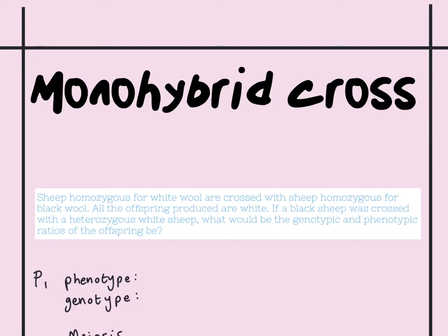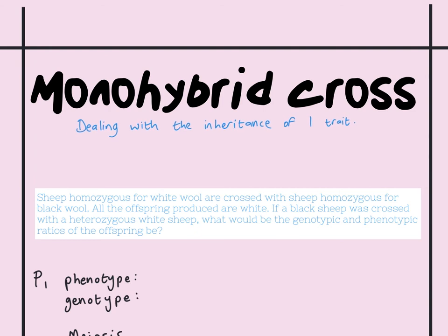The first type of genetic cross you need to understand is a monohybrid cross. A monohybrid cross is when you are dealing with the inheritance of only one trait. That trait might be flower colour, plant height, eye colour, fur colour, hair texture — whatever it is. If it is just one trait, it is a monohybrid cross.